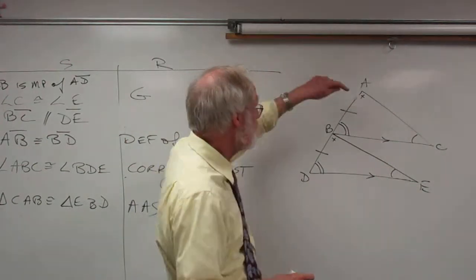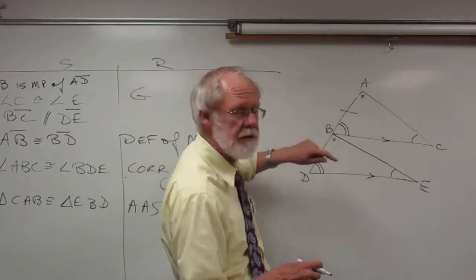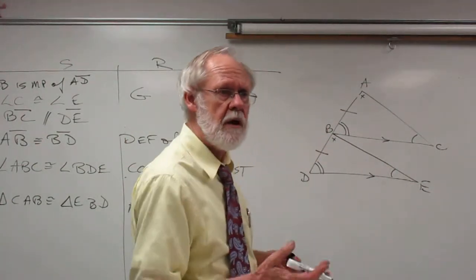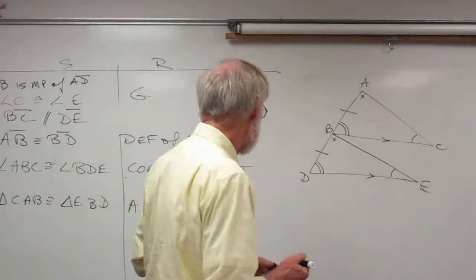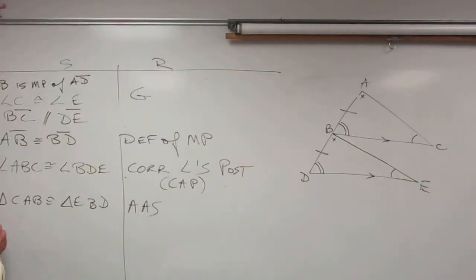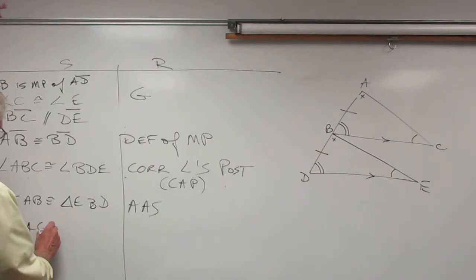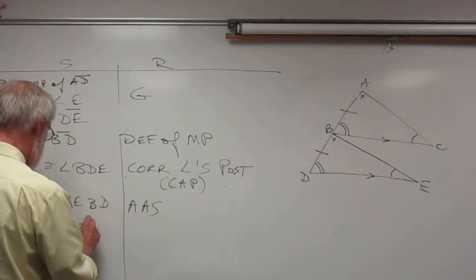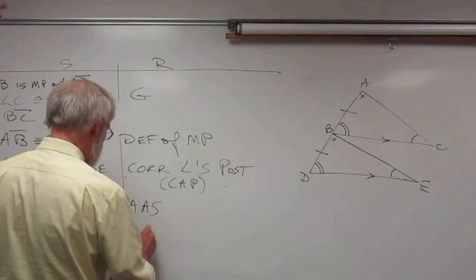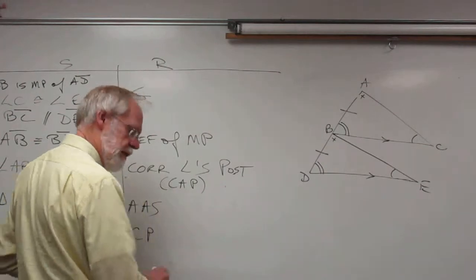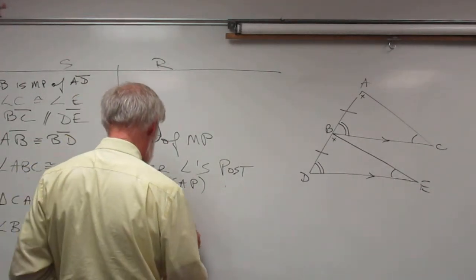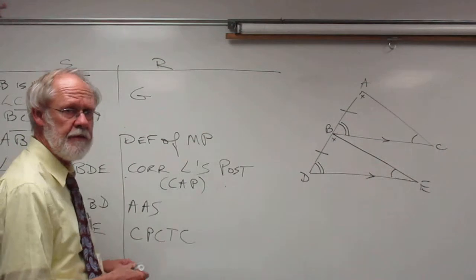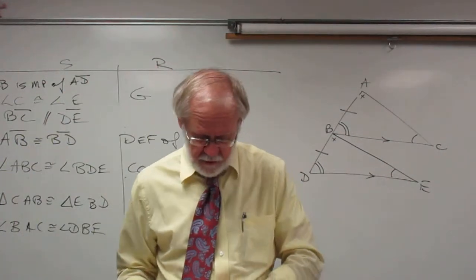Now that the two triangles are congruent, it's easy to prove the two corresponding angles are congruent. Angle BAC is congruent to angle DBE — corresponding parts of congruent triangles are congruent, CPCTC. That concludes this proof.